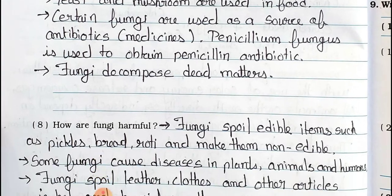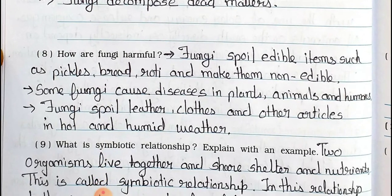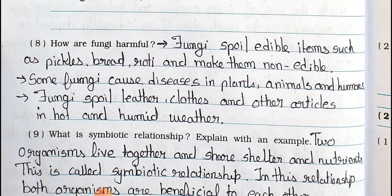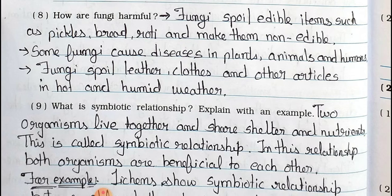Question number eight: How are fungi harmful? Answer: Point one: fungi spoil edible items such as pickles, bread, and roti and make them non-edible. Point two: some fungi cause diseases in plants, animals, and humans. Point three: fungi spoil leather, clothes, and other articles in hot and humid weather.